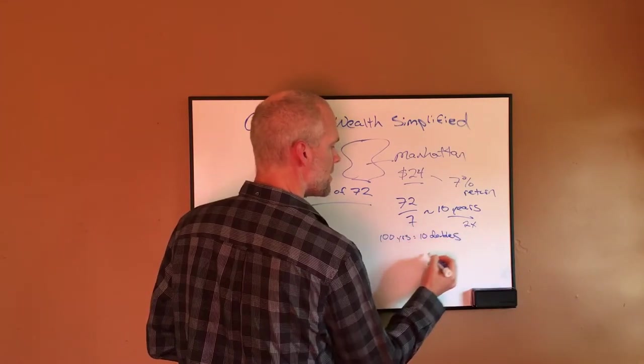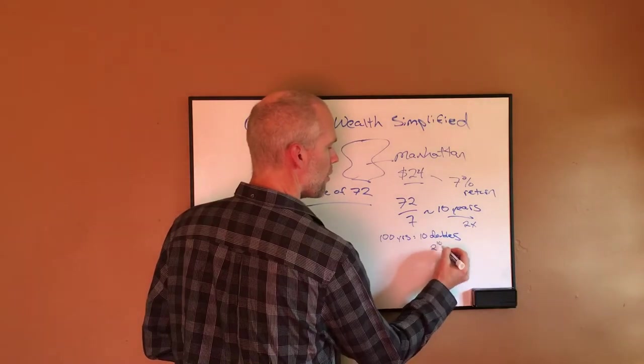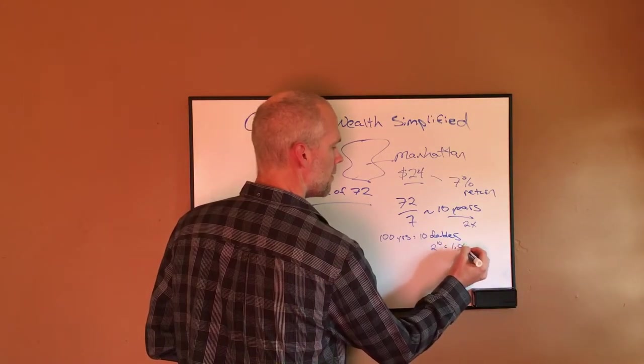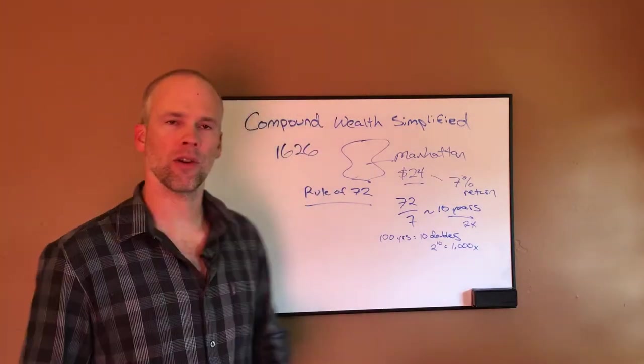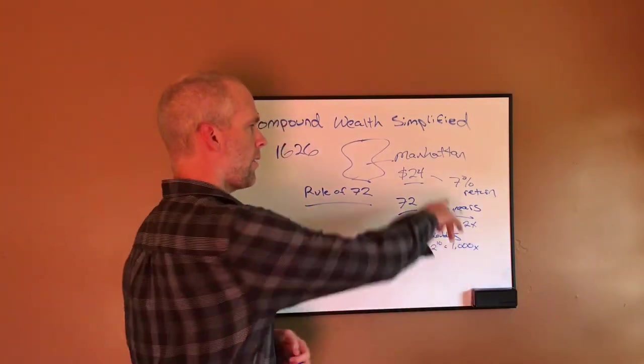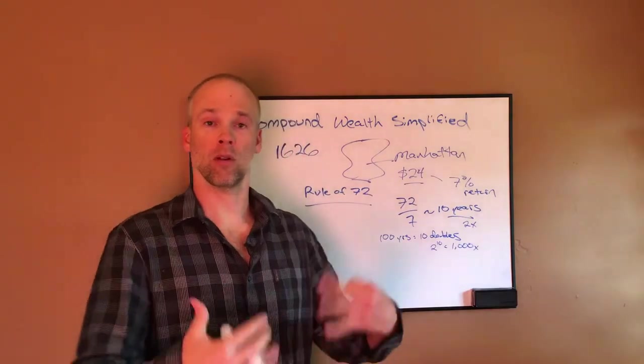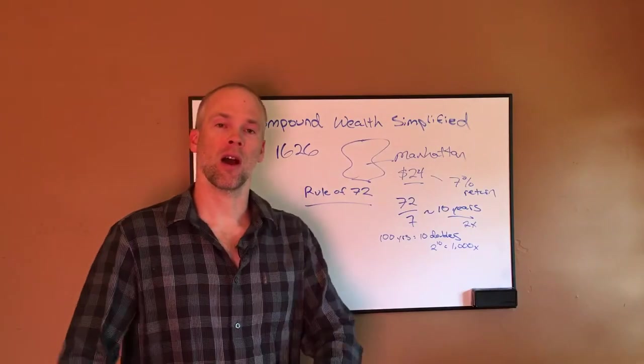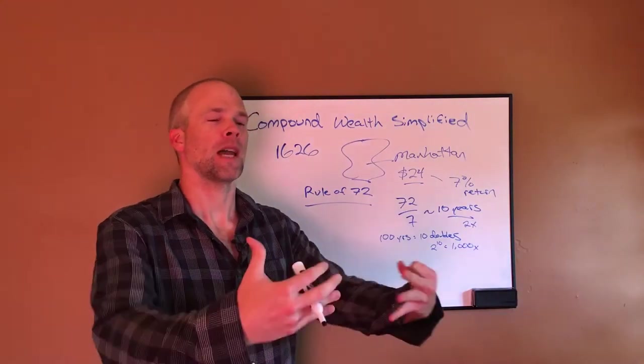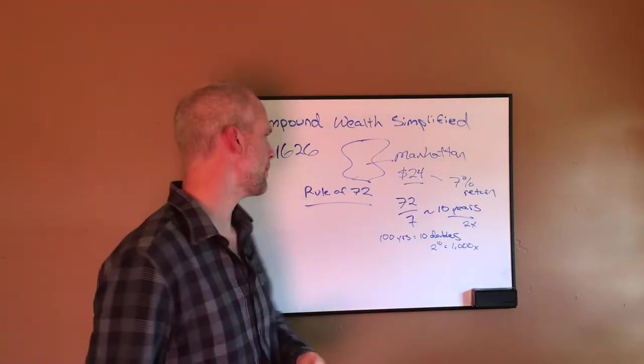So what is that? That's 2 to the power of 10 or 1,000 times. So every 100 years, if I'm getting a 7% annual rate of return on my money, every 100 years, I'm increasing my money by 1,000 times.